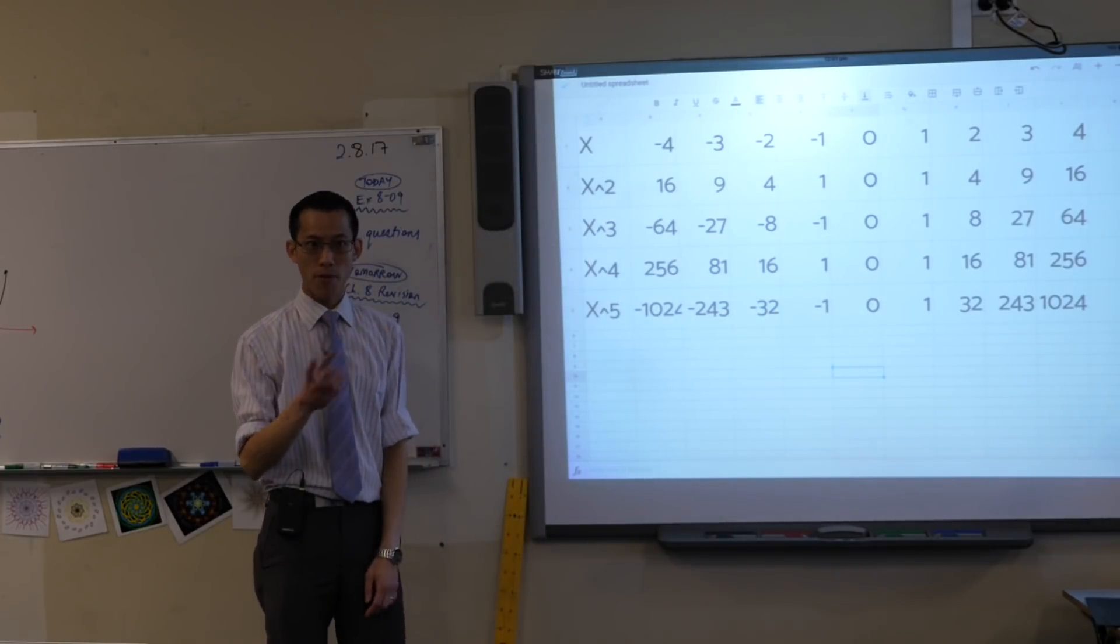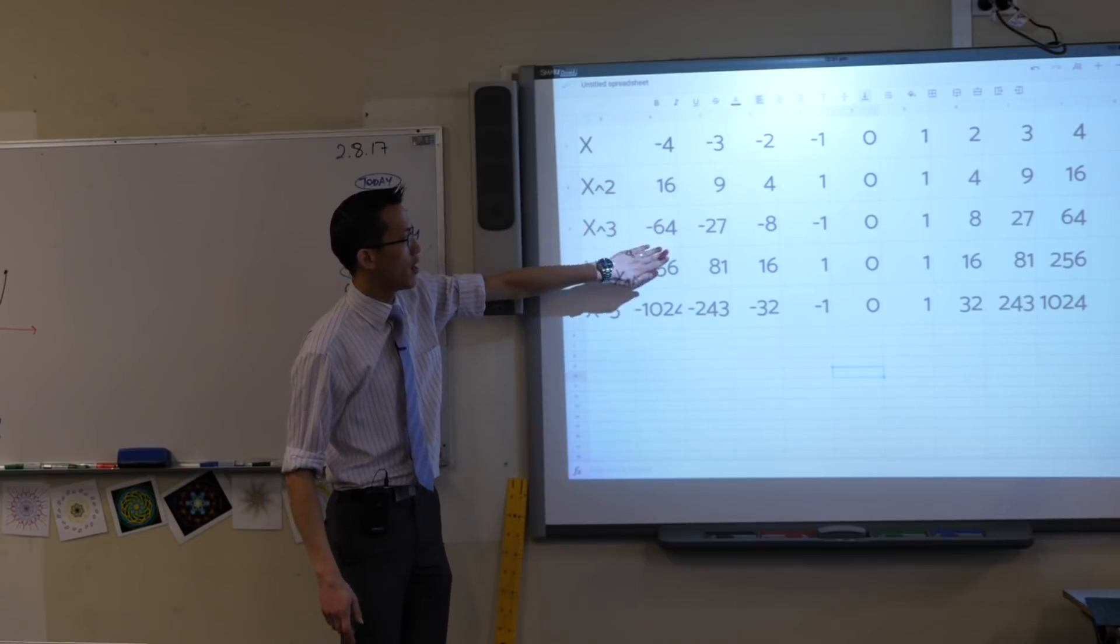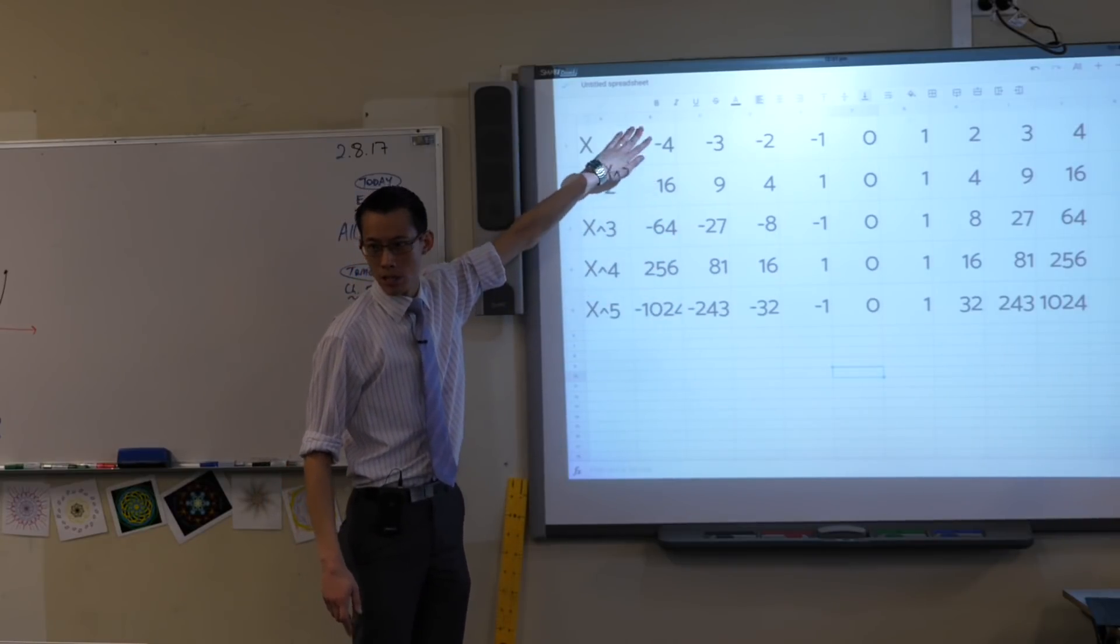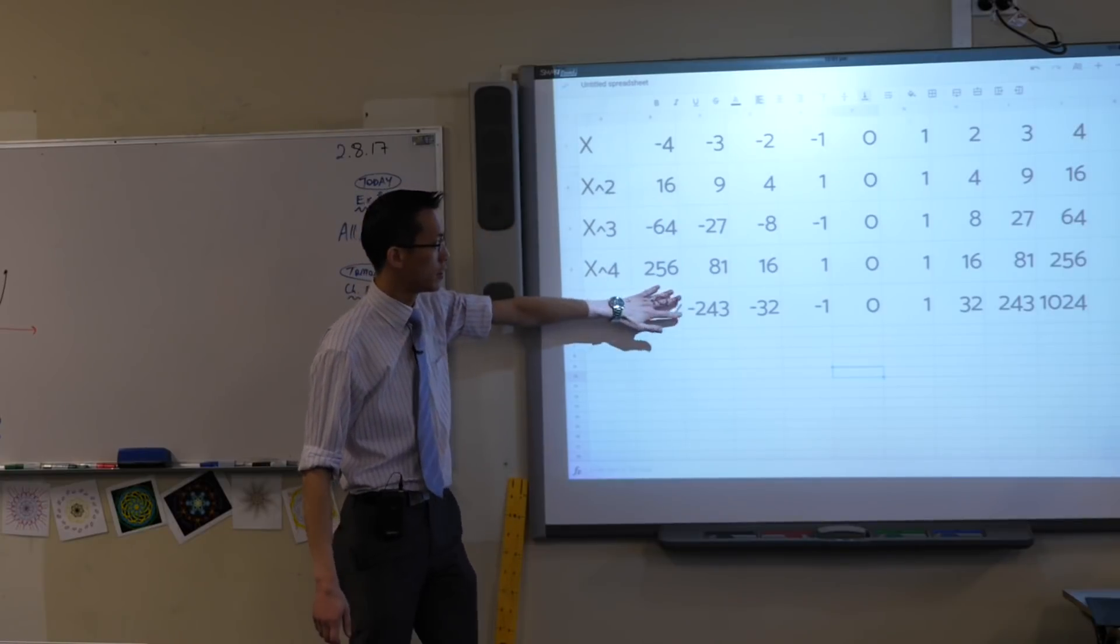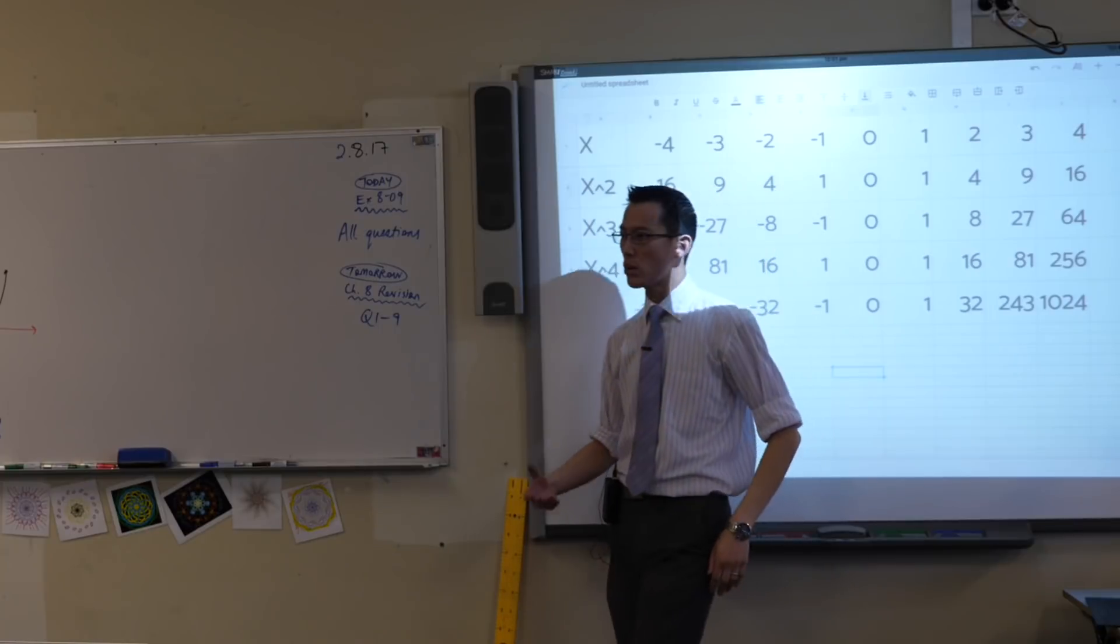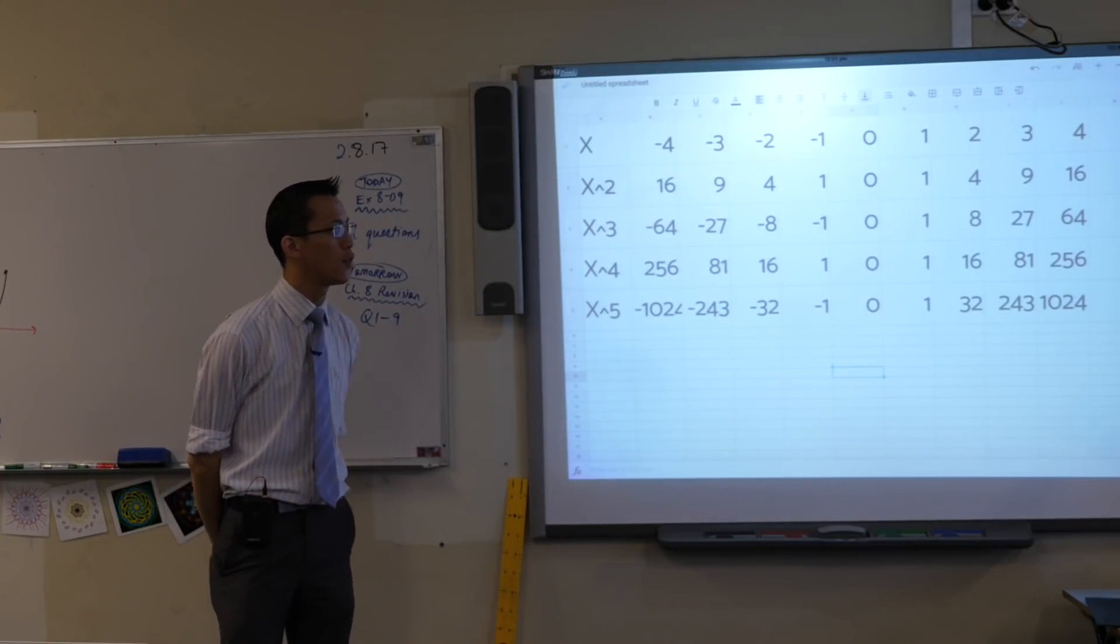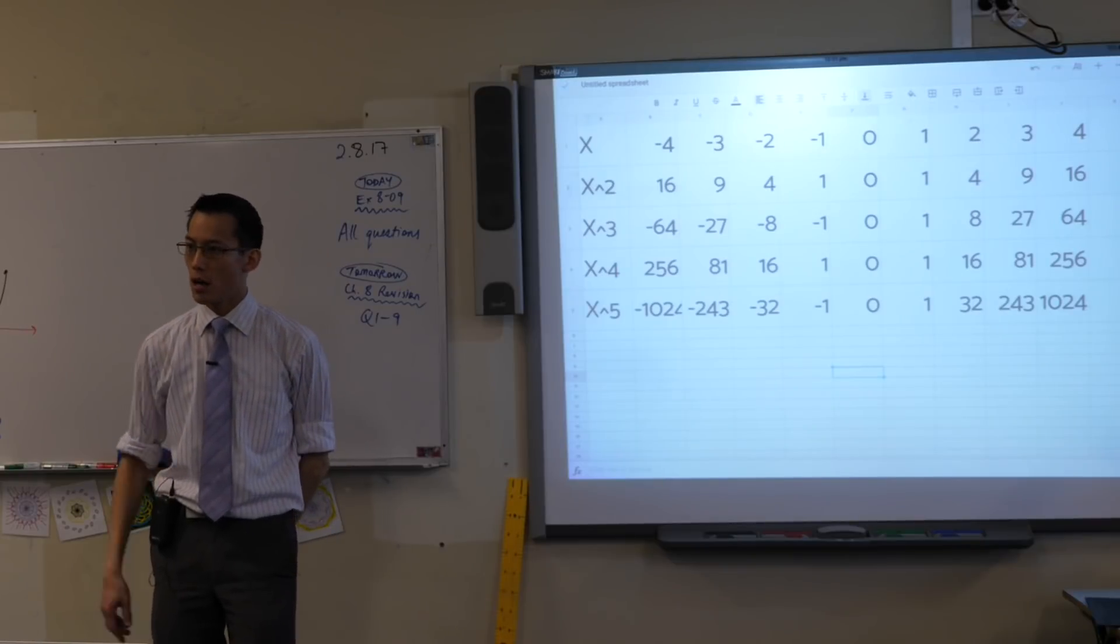One last thing before we actually just look at the pictures. Look at these numbers here when you go down a column. Can you see that? Down a column, or down this column, or down this column. What's happening? 4, 16, 64, 256, etc. What's happening?